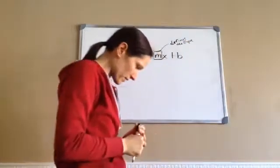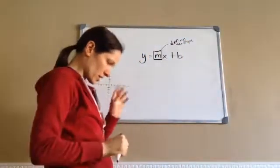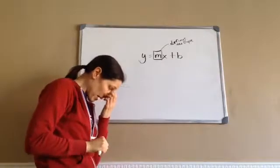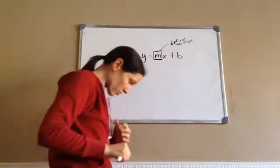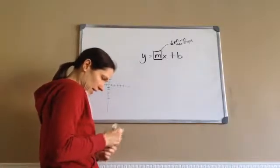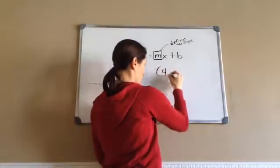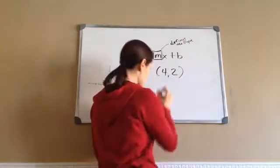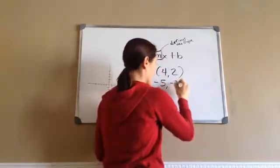Now, knowing that, here's what they say. This is 106.1. Find the equation of a line that passes through points 4, 2, and negative 5, negative 3.